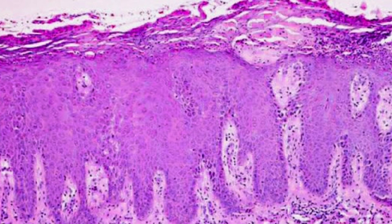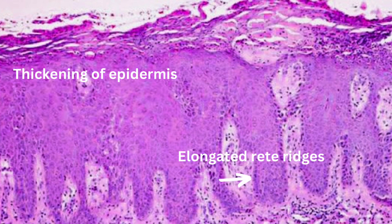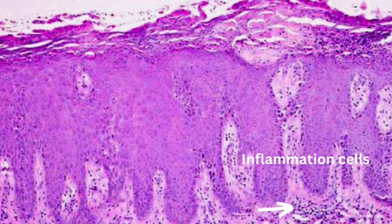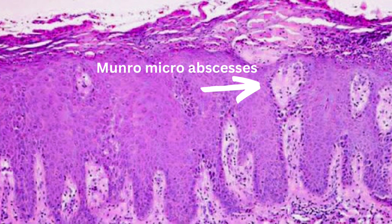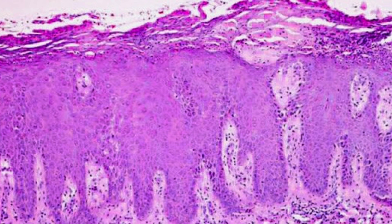The histological features of psoriasis include thickening of the epidermis, elongation of the rete ridges, and infiltration of inflammatory cells in the dermis and epidermis. Additionally, psoriasis is often associated with the presence of Munro's microabscesses, which are collections of neutrophils in the epidermis. In summary, psoriasis is a chronic inflammatory disorder that involves a complex interplay between immune cells, keratinocytes, and cytokines.